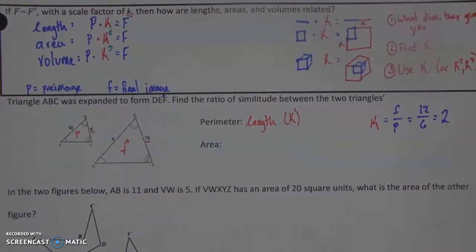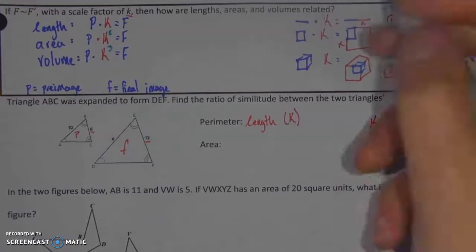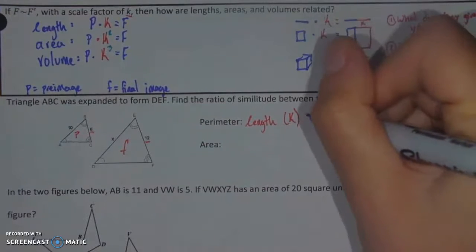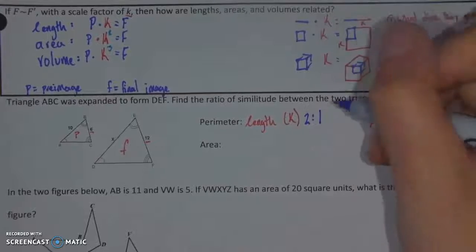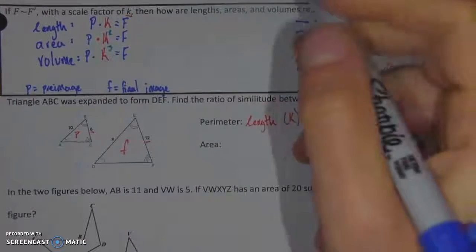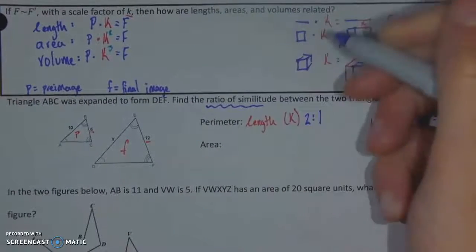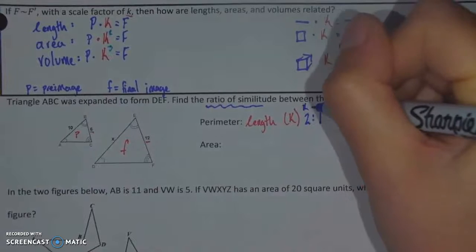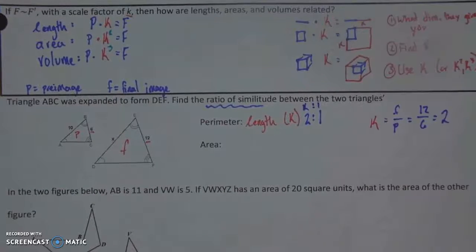That means that the ratio of similitude between the two triangles perimeter is going to be my pre-image 2 to my final image of 1. And it does want a ratio of similitude here. So, you're going to put like k up here to 1 over here.